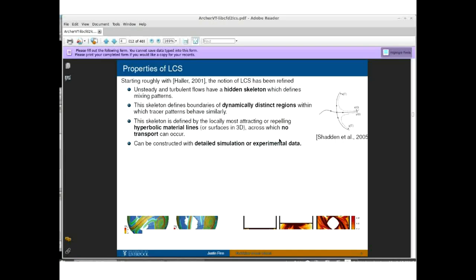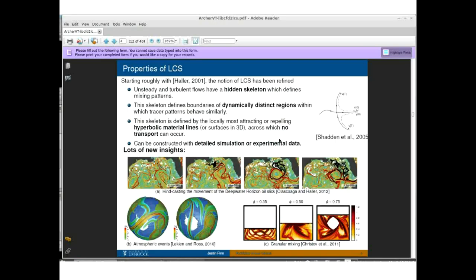There's been a lot of insight gained in a variety of different flows by looking at LCS in detailed simulation and experimental data. I've shown just a few examples here of some high profile work that was done after the Deepwater Horizon oil spill in the Gulf of Mexico. Using the drifter data that was available, Polescarga and Hollis basically hindcasted the movement of the oil slick and related it to the Lagrangian coherent structure in the Gulf of Mexico. There's also been work looking at atmospheric events, shown here by Likian and Ross. And then even looking at granular flows. This is a result from Ivan Kristoff's work of segregation of two species in a rotating tumbler. You have little particles and big particles, and the rotating drum goes around and around, and these Lagrangian coherent structures can be used to understand the segregation dynamics. Lots of new insights that we can learn about a variety of different applications.